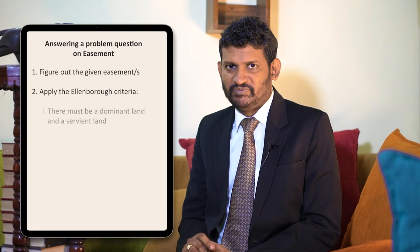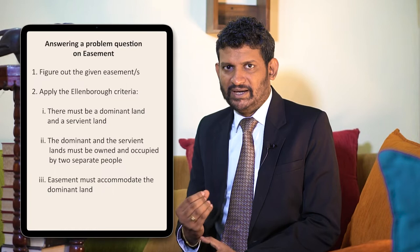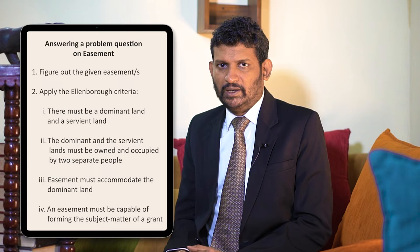The second criteria is that the dominant land and the servient land must be owned and occupied by two separate people. The third point is the easement must benefit the land — it must accommodate the dominant land. Finally, the easement must be capable of forming the subject matter of a grant.